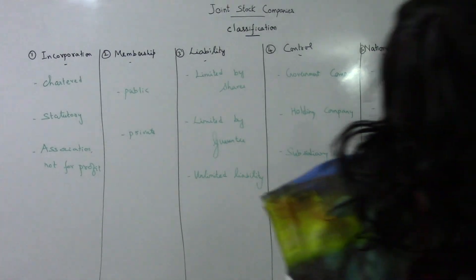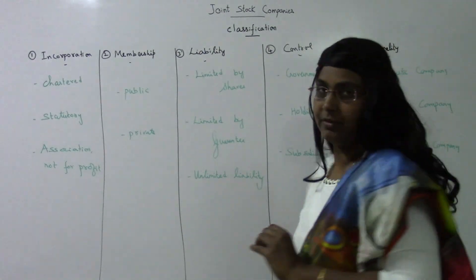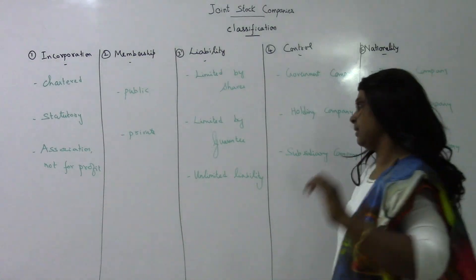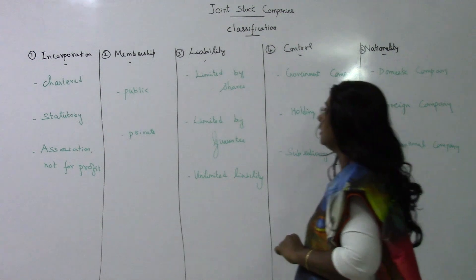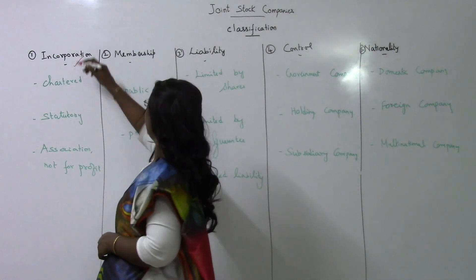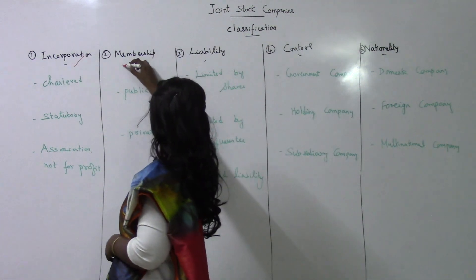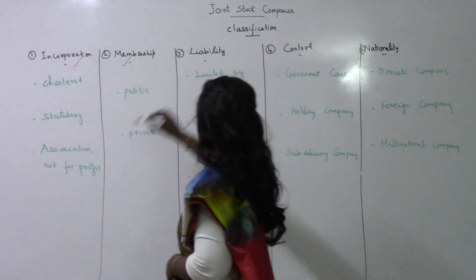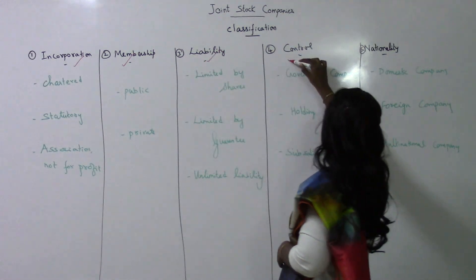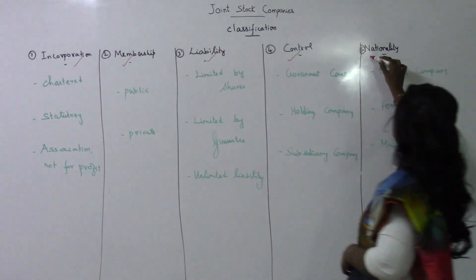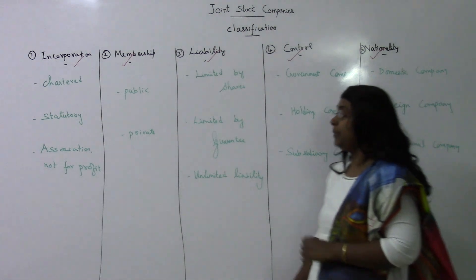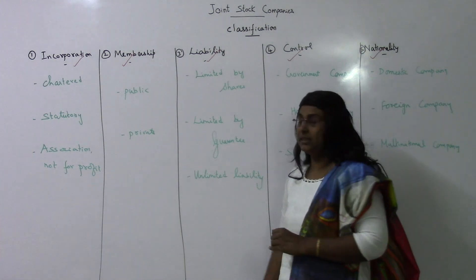So far in our discussion of classification of companies, let's do a fast summary. We classify on the basis of incorporation, on the basis of membership, on the basis of liability, on the basis of control, and on the basis of nationality.